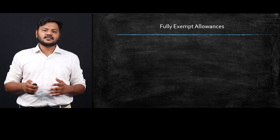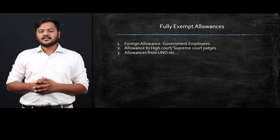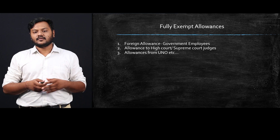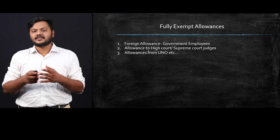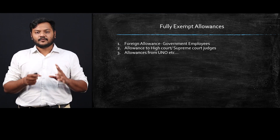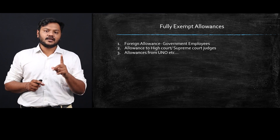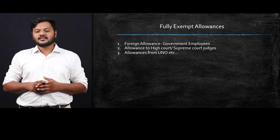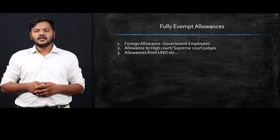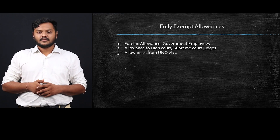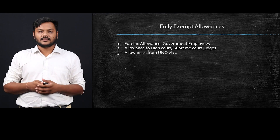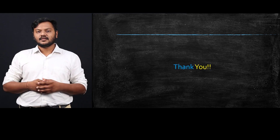Finally, fully exempt allowances are completely exempt irrespective of your status. One is foreign allowances — but note that foreign allowances given to government employees are fully exempt, whereas foreign allowances given to non-government employees are fully taxable. Second is allowances given to High Court or Supreme Court judges. Third is allowances given to UNO (United Nations) employees. These allowances are fully exempted. In the next session we will discuss perquisites.